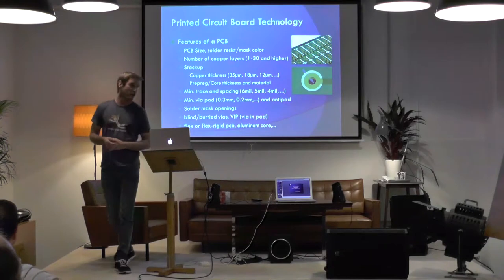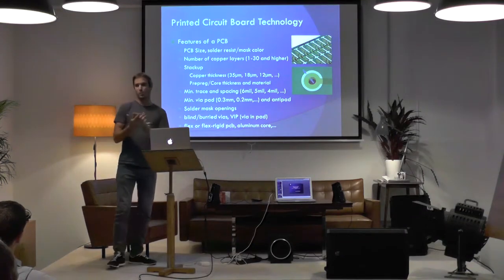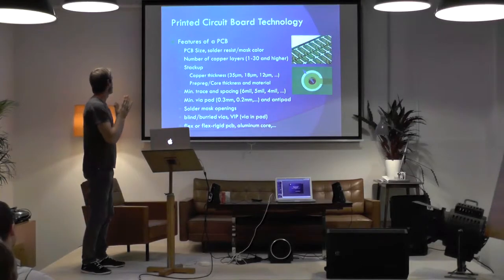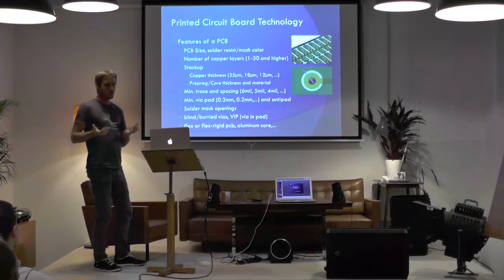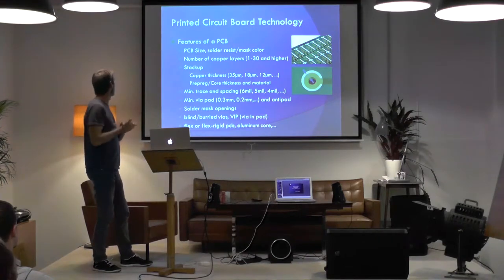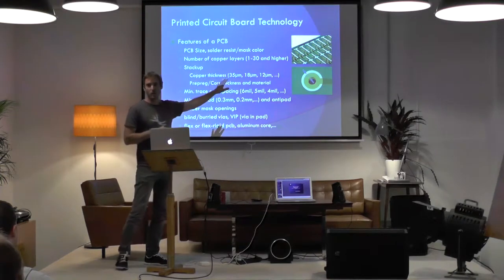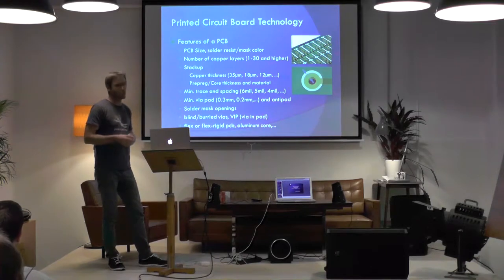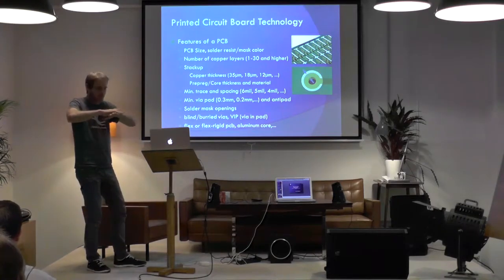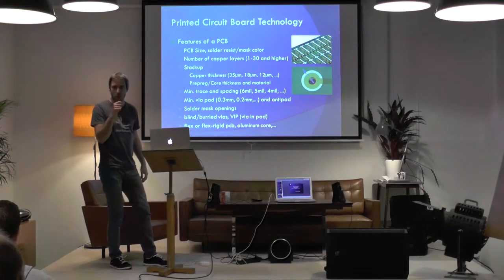I will start with the basics of printed circuit boards. This is the basic mechanical layer we need to place our components. What does the circuit board consist of? The first thing we need to know is what size it should be — we build IoT devices so smaller is better. One of the first obvious things is the solder mask, which is the colored thing you see on PCB boards. It is mainly not for optics but to keep the solder where it should be, so the solder doesn't flow over your board.